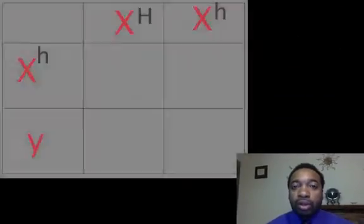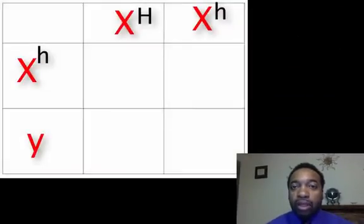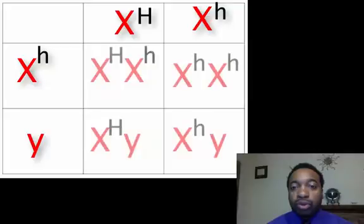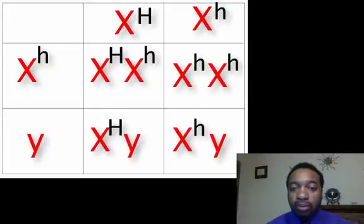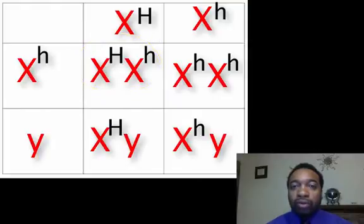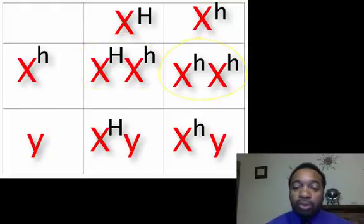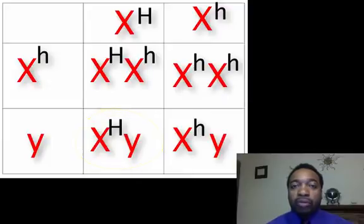Then you just set up and fill out the Punnett square as normal. One possibility is that we're going to have a normal carrier female. We're also going to have a female who has hemophilia. We're going to have a normal male, and then we're going to have a male with hemophilia.